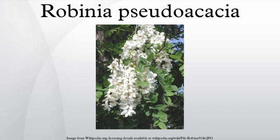Fruit: legume two-valved, smooth, 3–4 inches long and half an inch broad, usually 4–8 seeded. Ripens late in autumn and hangs on the branches until early spring. Seeds dark orange-brown with irregular markings. Cotyledons oval, fleshy.